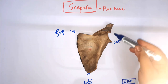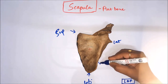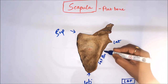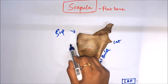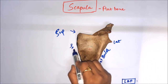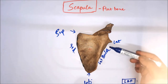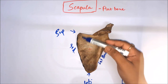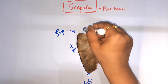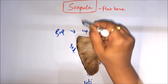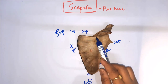At the lateral angle there will be the attachment of the humerus, and this should be the lateral border. This is the lateral border, and this one is the medial border. The lateral border is thick and the medial border is thin. And this one is the superior border.